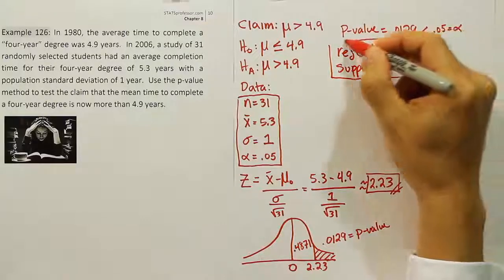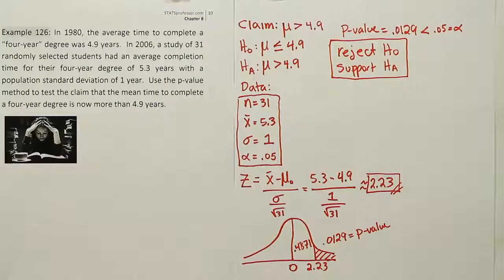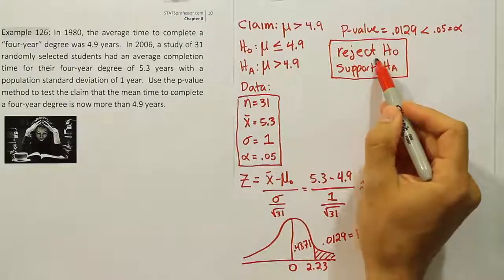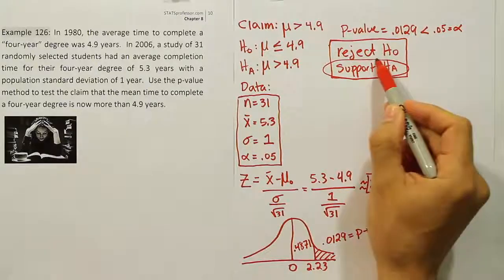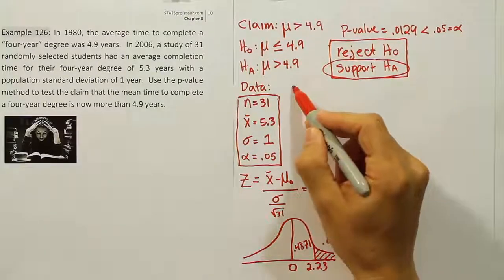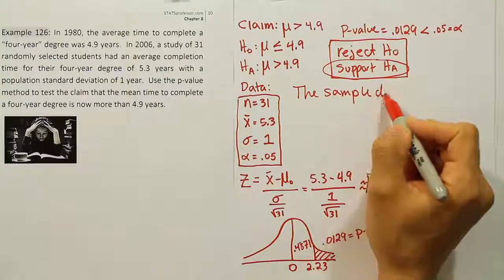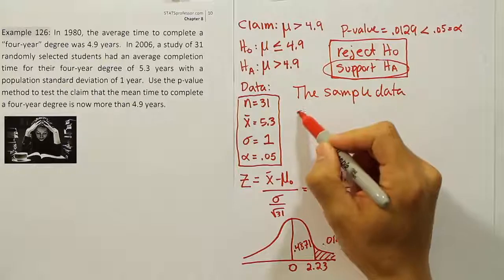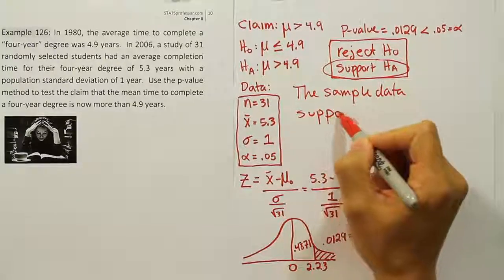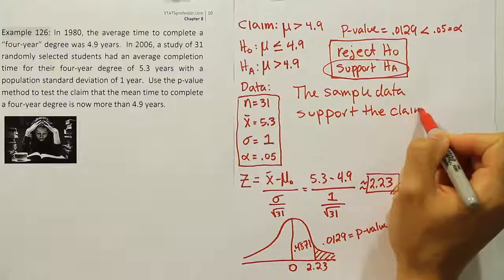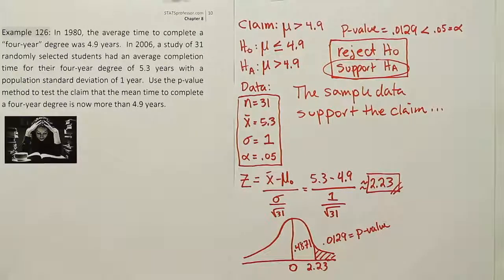Once we have this, our final step is to identify whether the claim is H0 or HA. Looking at the notation, the claim is HA, so we will say this phrasing for the problem: the sample data support the claim. And that's our conclusion.